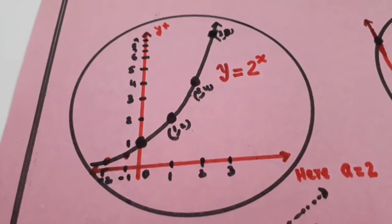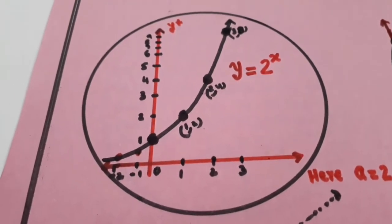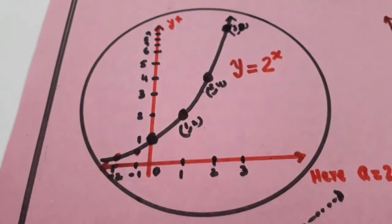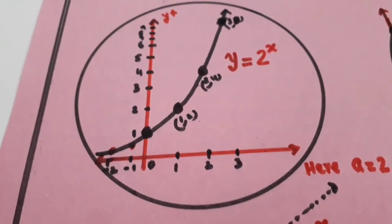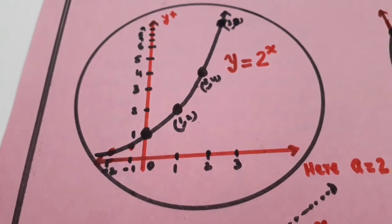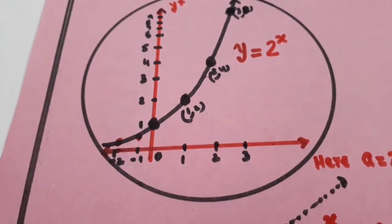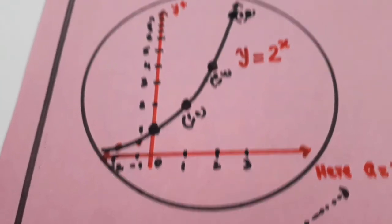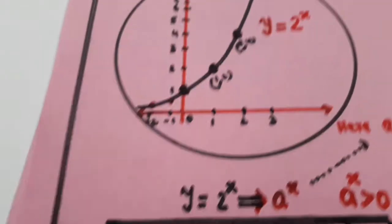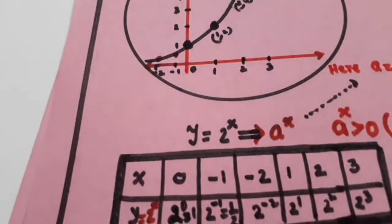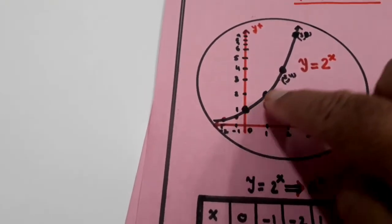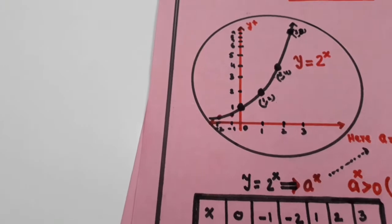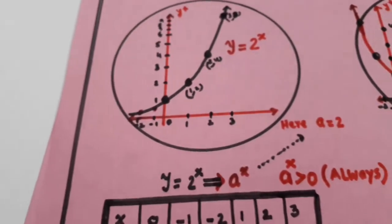If you make a graph then you can make this shape. So these are the values and these have been plotted here, the graph is like this.